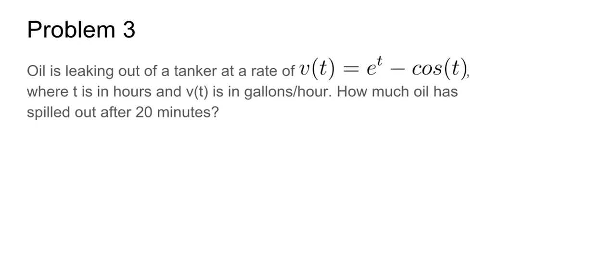Problem 3. Oil is leaking out of a tanker at a rate of v(t) equals e to the t minus cosine of t, where t is in hours and v(t) is gallons per hour. How much oil has spilled out after 20 minutes? Since we're being asked how much oil has spilled out after 20 minutes and we're not given a starting time, we can assume that the starting time is at time 0.